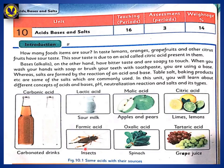Formic acid is inside your insects. Oxalic acid is inside your spinach. Tartaric acid is inside your grape juice. Carbonic acid is inside your soft drinks. This is why soft drinks are not good for healthy consumption.